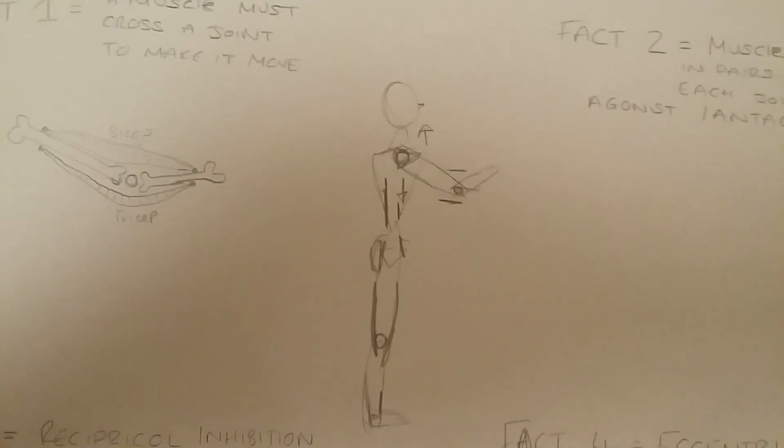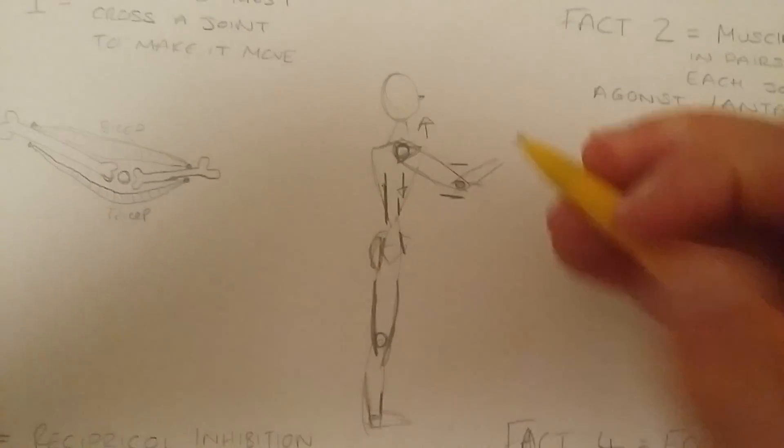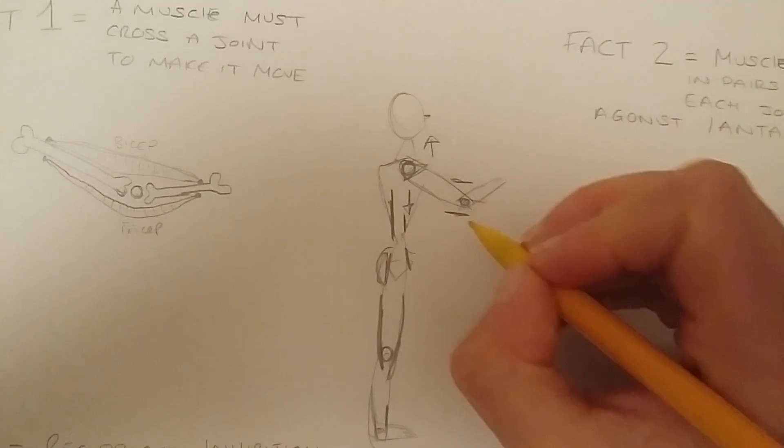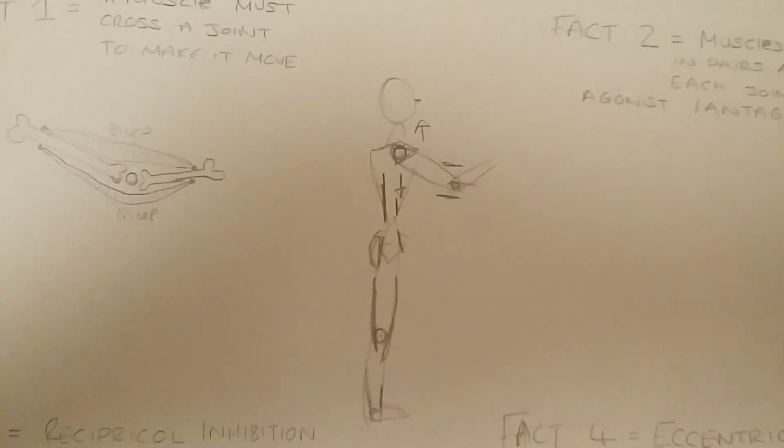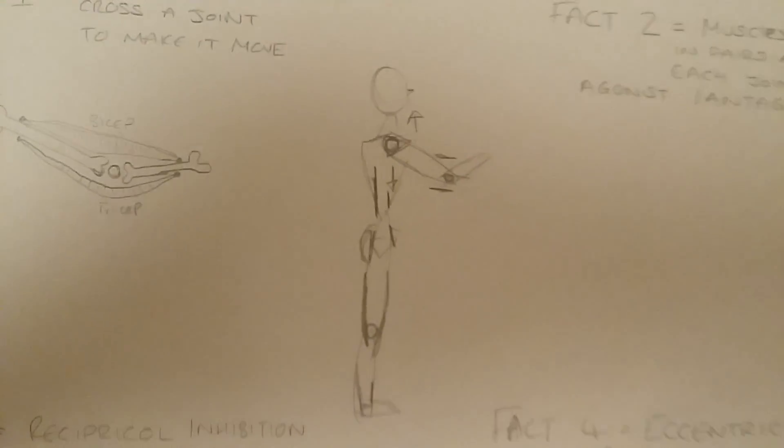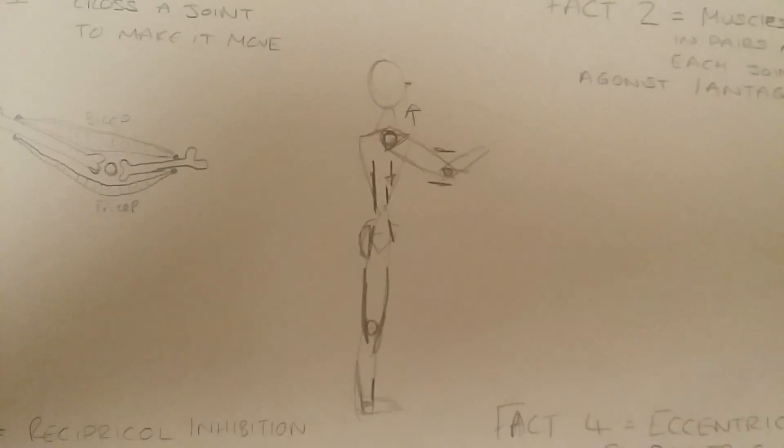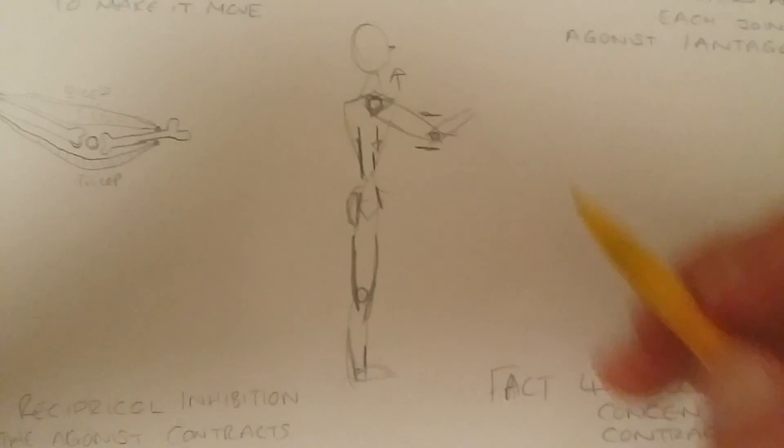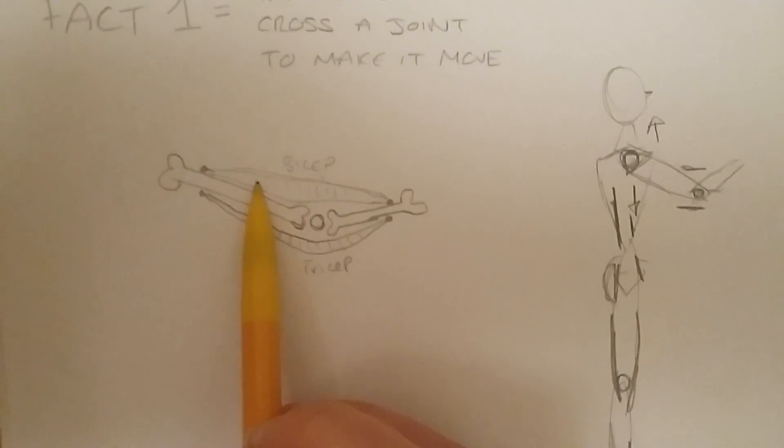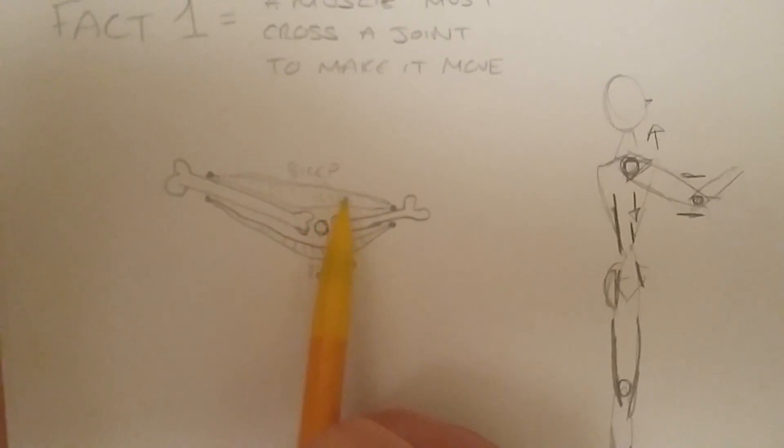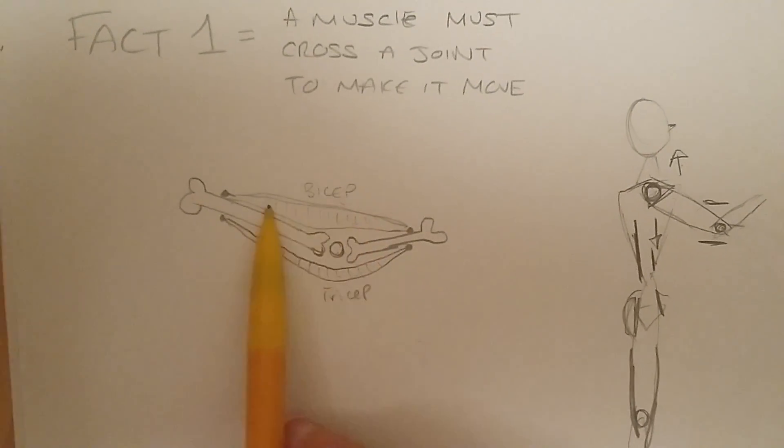Imagine you're doing a bicep curl. Now you know that the prime mover for that bicep curl is the bicep, not the tricep. How do you know it? Well, when you do it, that's where you feel it. When you do it, that's where you get the results. So you know that that is the prime mover. Now the bicep is contracting concentrically, which means it's getting smaller.